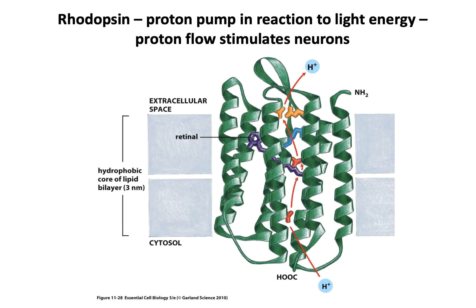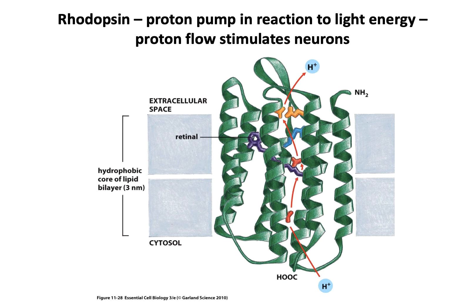Rhodopsin is an example of a light-driven pump. It has a chromophore in the middle — in this case retinol — which absorbs light of a certain wavelength. In doing so, it changes conformation and opens this pore, which allows hydrogen ions (protons) to move through. That change in proton concentration then stimulates a neuron and sends a signal to the brain that a certain type of light is hitting that particular receptor.